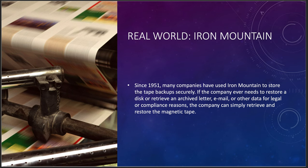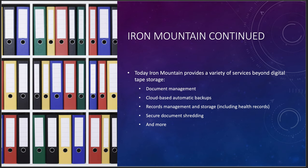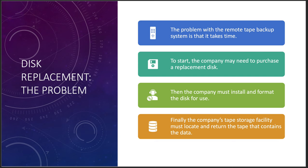Iron Mountain is basically disk or tape storage — they come, pick it up, take it off-site, and you request it back when something fails. They do document management, health records storage, secure shredding, and have started moving to cloud-based automatic backups. However, that requires Iron Mountain software installed on your servers, which raises trust questions — though you're trusting them with tape backups anyway. Remote tape backup takes time and is notorious for not working exactly when you need it.